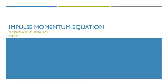This momentum equation is based on the law of conservation of momentum, which is also known as the momentum principle. This momentum principle states that the net force acting on a mass of flow is equal to the change in momentum of flow per unit time in that direction.